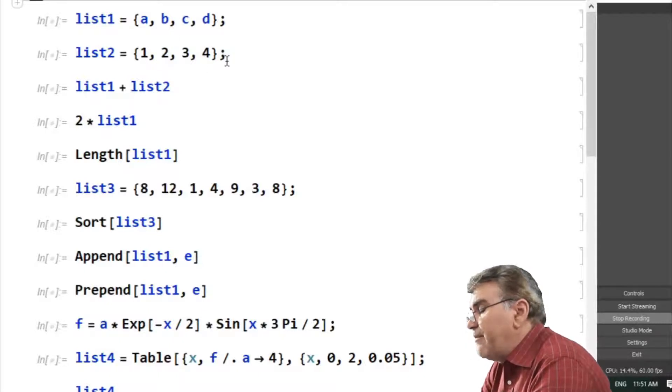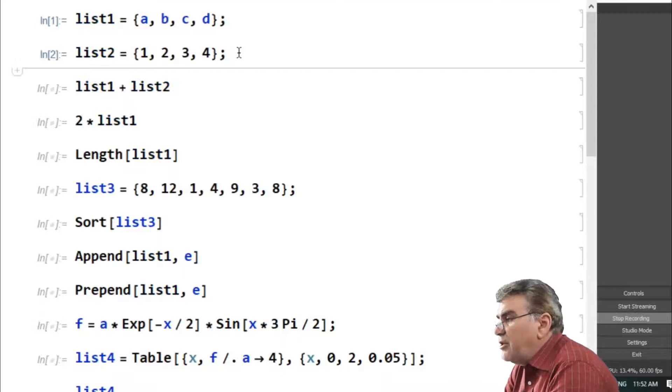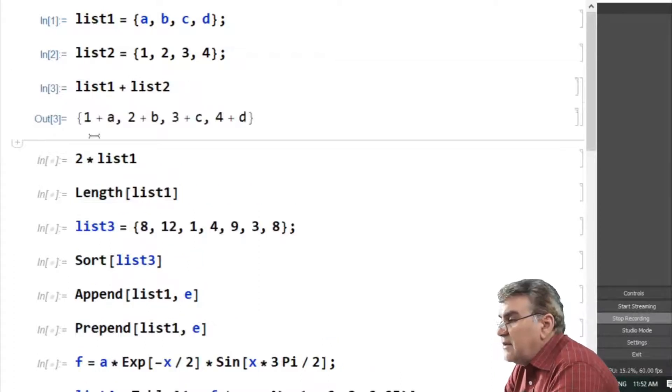Arithmetic operations on lists are carried in the same fashion as the arithmetic operations on numbers. For example, I can add these two lists to each other by just putting a plus sign between them. If I run this, I'll get another list where each element of one list is added to the corresponding elements in the next list. So you see 1 is added to a, 2 is added to b, and so on.